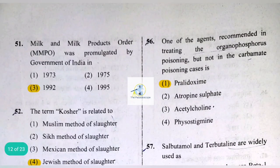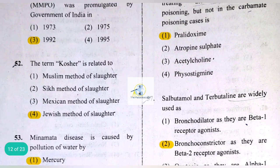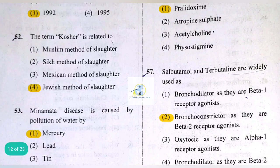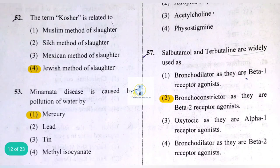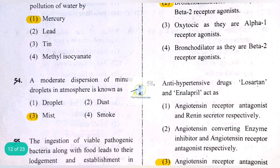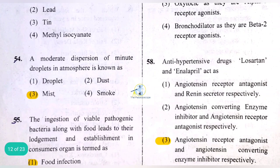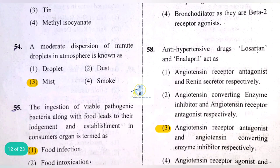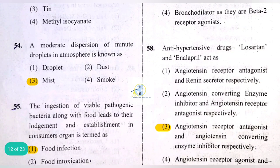One of the agents recommended in treating organophosphorus poisoning but not in carbamate poisoning cases is pralidoxime. Salbutamol and terbutaline are widely used as bronchodilators as they are beta-2 receptor agonists.